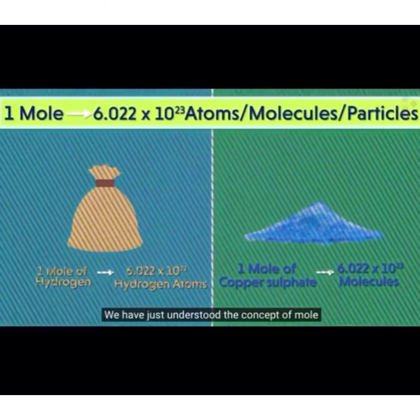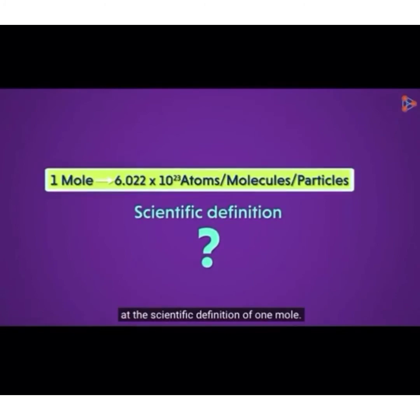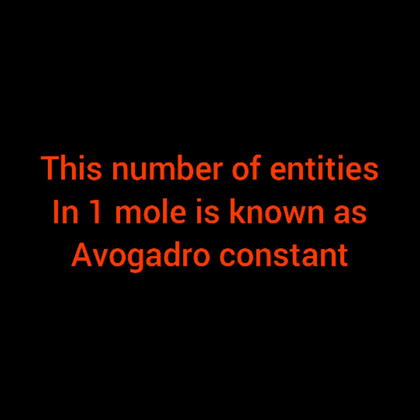We have just understood the concept of mole in simple words, but we are yet to look at the scientific definition of one mole. The mole is a unit of measurement for the amount of substance in the international system of units. A mole of a substance or a mole of a particle is defined as exactly 6.022 into 10 to the power 23 particles, which may be atoms, molecules, ions, or electrons. This number of entities in 1 mole is known as the Avogadro constant.